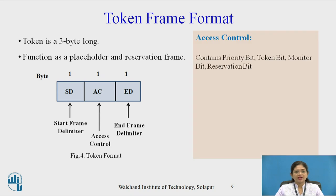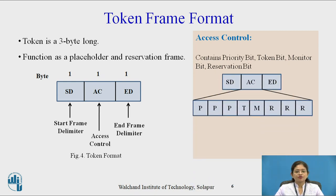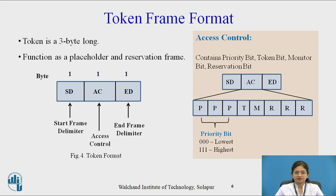The access control field contains a priority bit, token bit, monitor bit, and reservation bit. The first 3 bits are priority bits — when they are 0,0,0 it is the lowest priority, and when they are 1,1,1 that field has the highest priority.